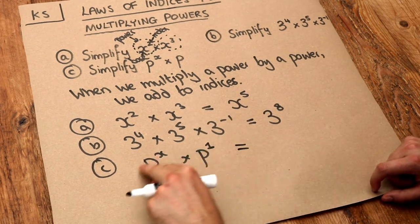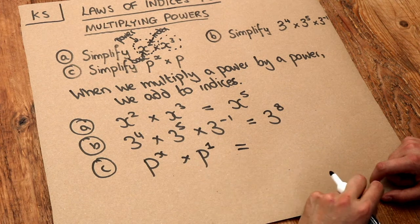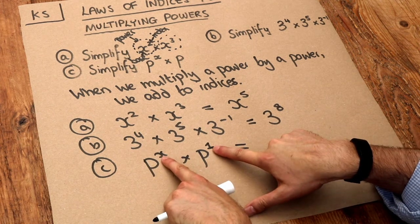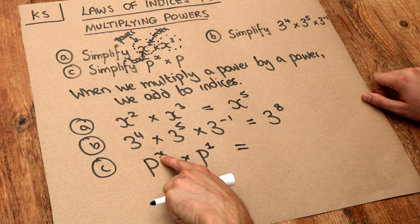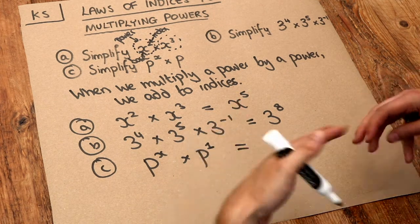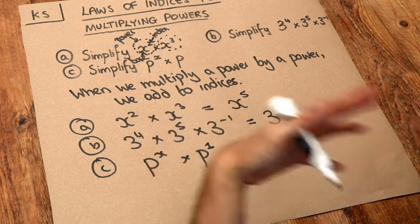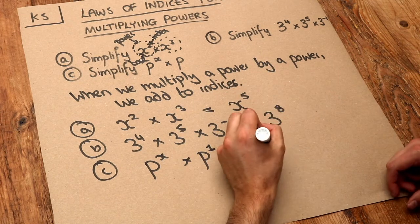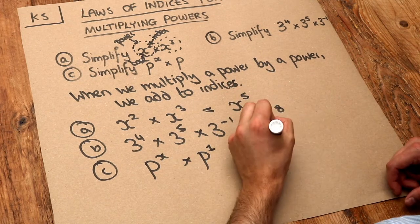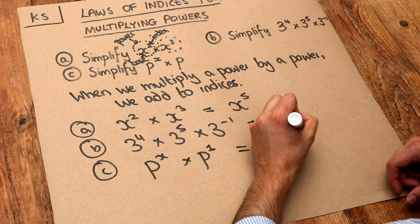Now we're multiplying two powers together with a consistent base of p, so we can add the indices. We add the x and the 1 to get x plus 1. That doesn't simplify—they're not like terms—so we have p to the power of x plus 1, and we can't simplify that any further.